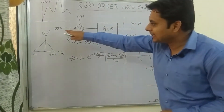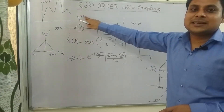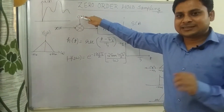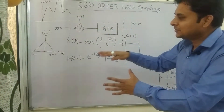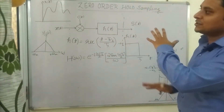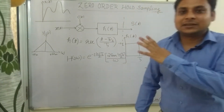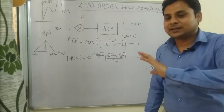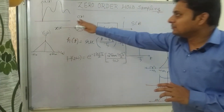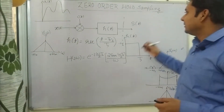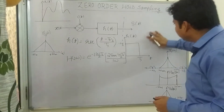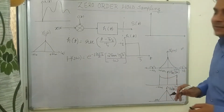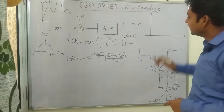First we take a continuous time signal x(t) and pass it through a mixer with a pulse train c(t) — the same as used in ideal sampling. It is a mathematical model. When x(t) is multiplied by c(t), we get the same ideal sampling process as studied in the previous lecture.